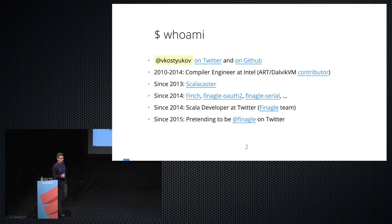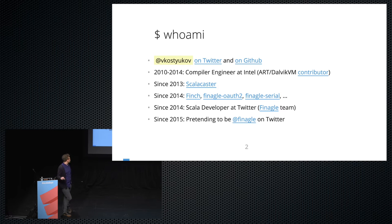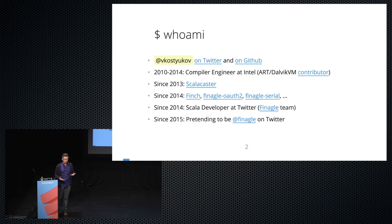Who am I? My name is Vladimir, and I've been working on Finagle for almost two years on the Finagle team at Twitter. Before that, I was doing low-level stuff — working with compilers and VMs at Intel. Then something happened in 2013 and I started playing with functional programming in Scala, and now I finally do that full-time. I'm also the person responsible for those boring tweets from @finagle on Twitter.